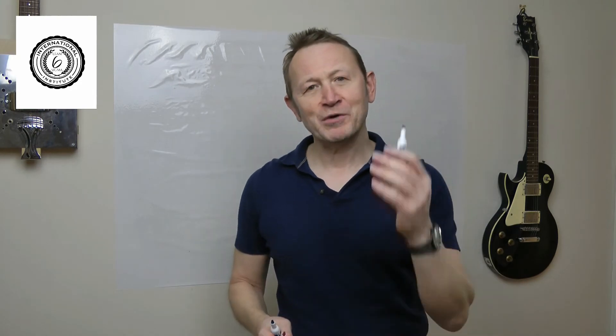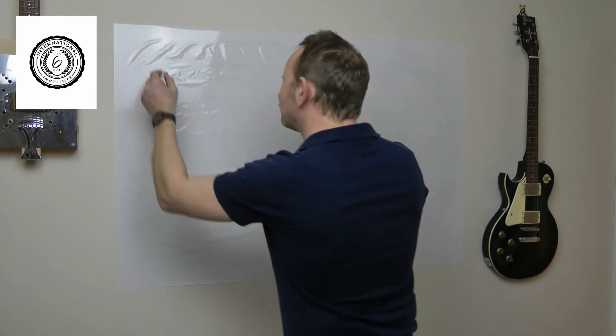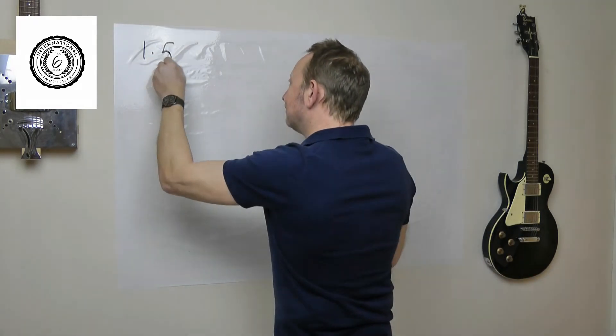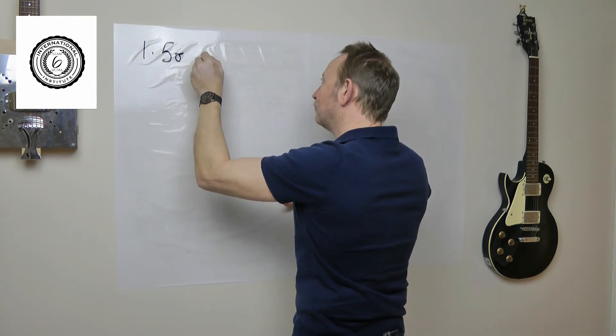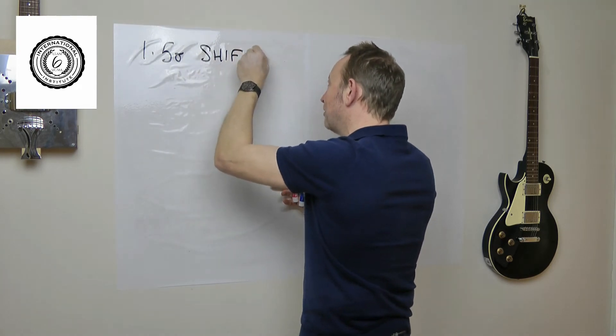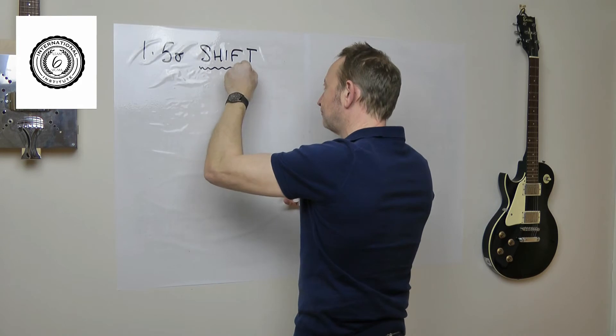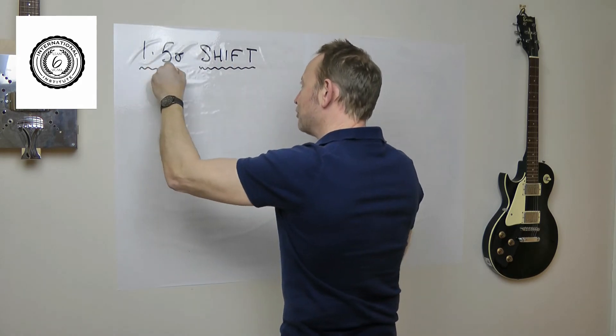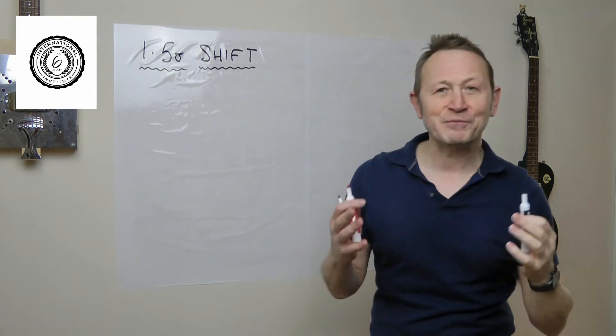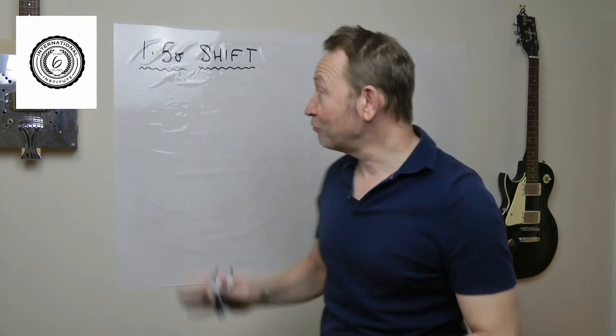Welcome to Complexity Made Simple, my name is Paul Allen and the subject of today's video newsletter is the 1.5 Sigma shift. This thing confuses lots of people, but it's actually a very sensible and practical thing. We're going to talk about it.